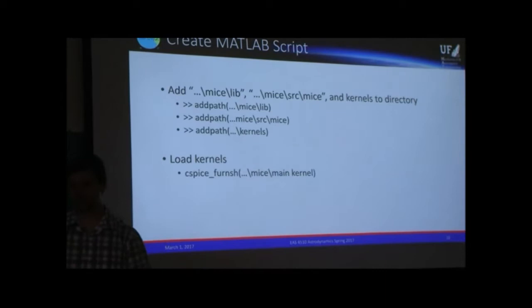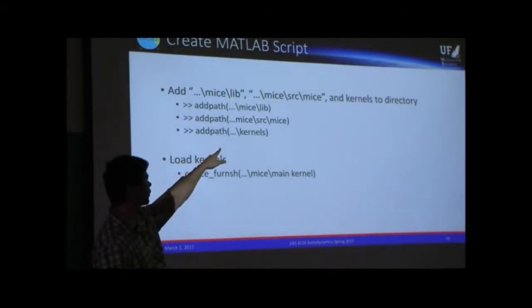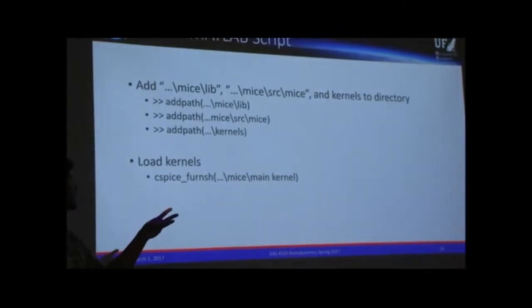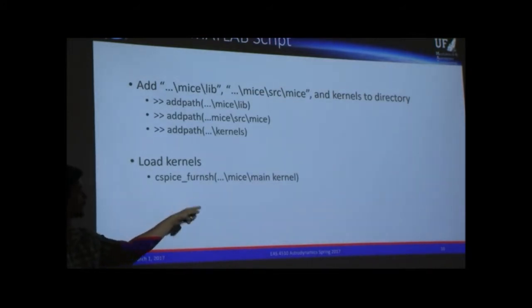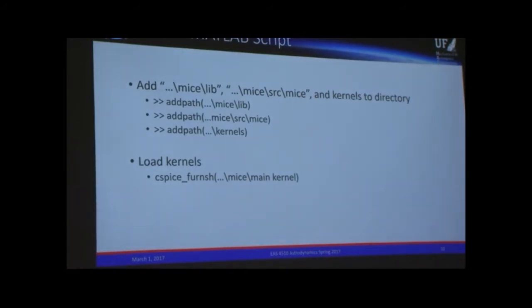Once we're ready to make a simulation in MATLAB, there are a couple of preamble steps. First, we load up the lib folder and the mice folder within our mice subfolder downloaded from the NAIF website. Then we add a path to wherever we're storing our kernels. To use our kernels we have to load them first using the cspice_furnish command, which reads your meta kernel so it knows which kernels to use. When we're done with our simulation we clear what they call the kernel pool, so that a subsequent simulation doesn't pull from the same kernel and get a mismatch of data.